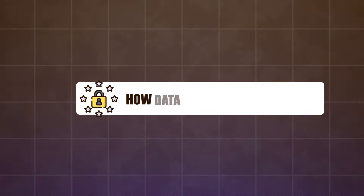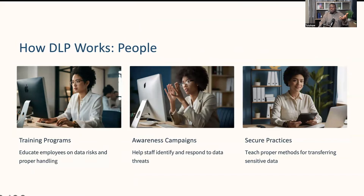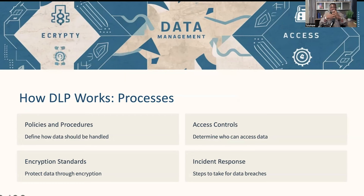Now let's explore how data loss prevention actually works. DLP is not just about installing software — it's a holistic approach that involves people, processes, and technology working together. One of the most important aspects of DLP is educating and training your employees. They need to be aware of the risks and understand how to handle sensitive information properly, including recognizing phishing attempts, using secure methods to transfer data, and knowing what constitutes a data breach. These are the policies and procedures your organization puts in place to manage data — for instance, rules about who can access certain types of data, how data should be encrypted, and what steps to take in the event of a potential data breach.